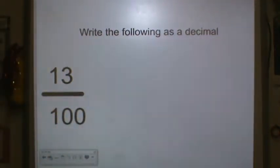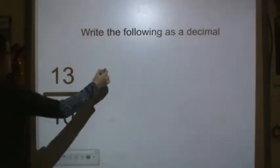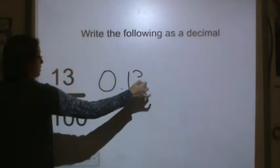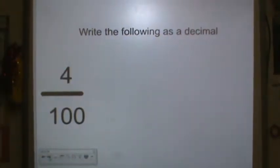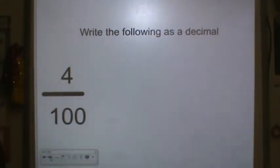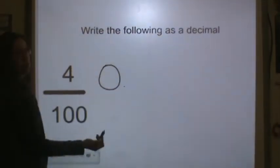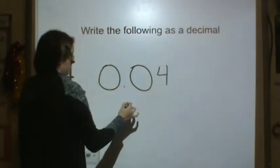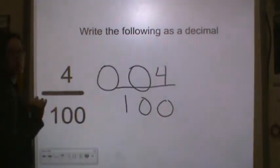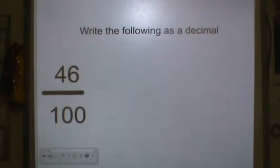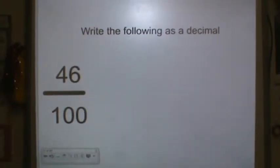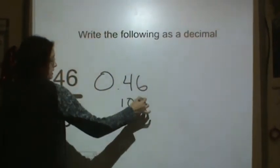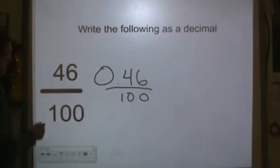Here I can write it the way it is. 13 hundredths. I have 0 wholes because my numerator is less than my denominator and 13 hundredths. 4 hundredths. I can write it the way it is. I have 0 and I have nothing in my tenths place. I need to put a 0 there and 4 hundredths. And again, remember the trick? 4 hundredths, so we know it's correct. 46 hundredths. Again, I can write it just the way it is. And the 6 is in the hundredths place. Remember the trick? So 46 hundredths.